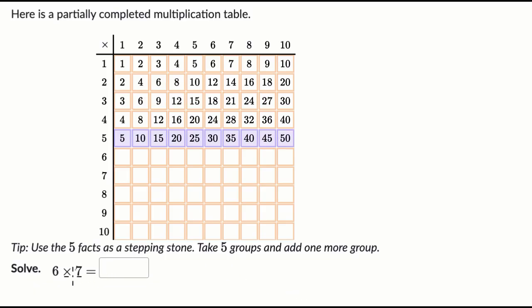All right, so we're trying to figure out what 6×7 is. So 6×7 would be right over here on our multiplication table. And they give us a nice hint. Use the five facts as a stepping stone. Take five groups and add one more group.